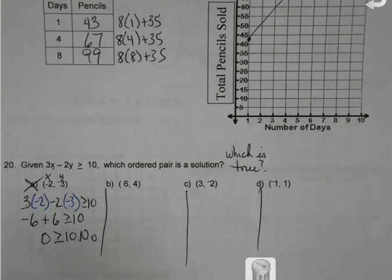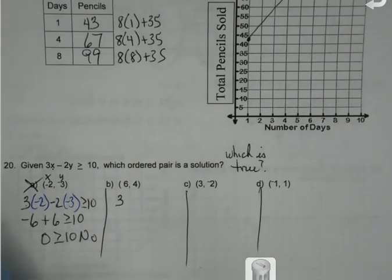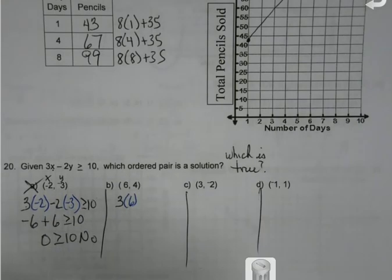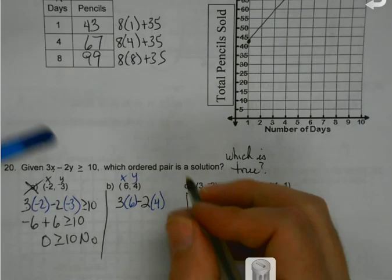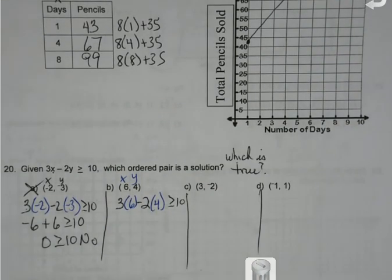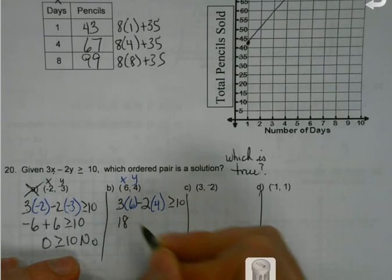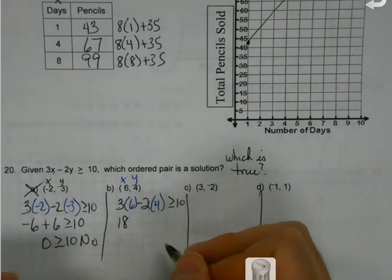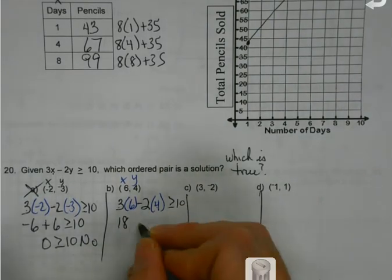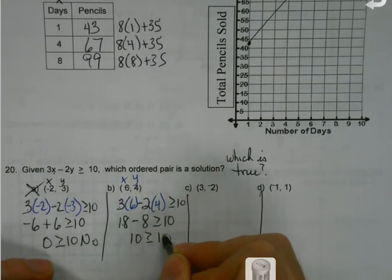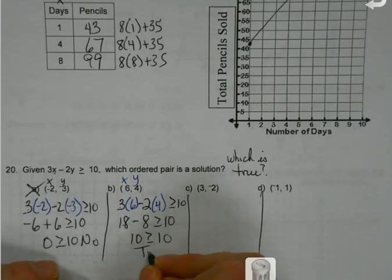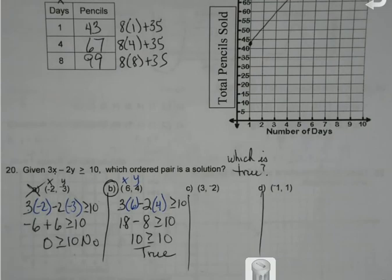Do I have to do this for all of them? Hopefully I'll get it soon. For B: there's my y — 3 times 6 is 18, negative 2 times 4 is negative 8. 18 minus 8 is 10. Is 10 greater than or equal to 10? Yes. And there will only be one that works — once you find one that works, you don't have to do any more. You can just be done.